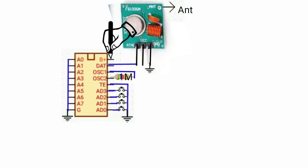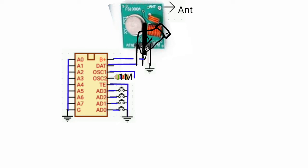Connect pin 18 of the IC and the VCC to the middle pin of the transmitter. Then connect both to the 5 volt power supply.